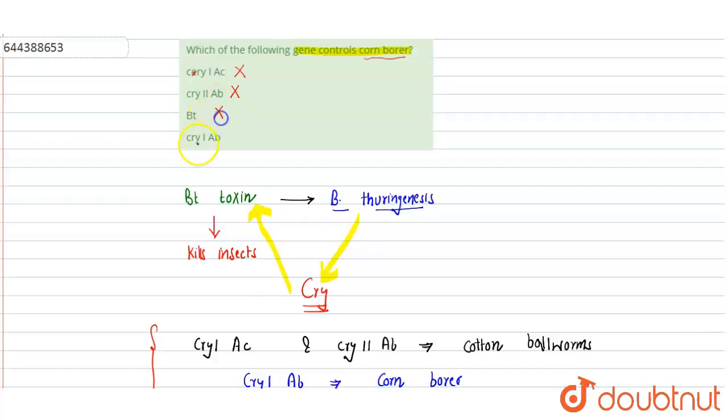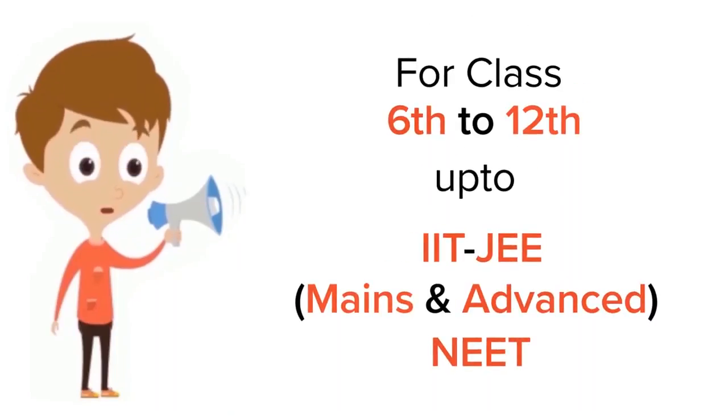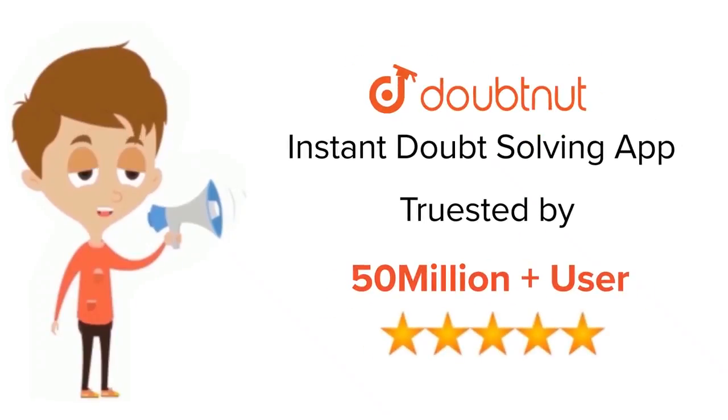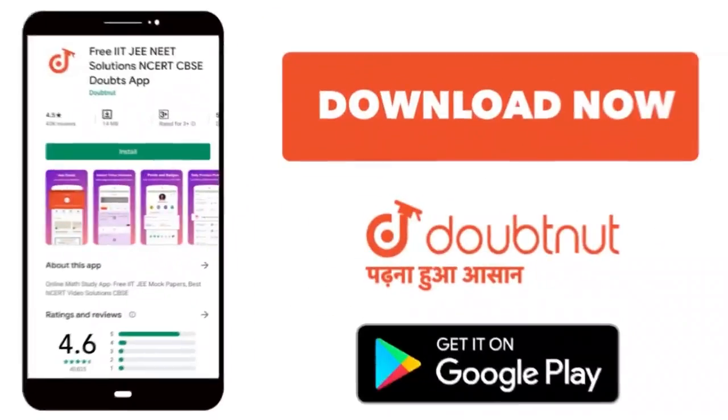So this is the correct option. Option D is correct. Hope you understand. Thank you. For class 6 to 12, up to IIT-JEE and NEET level, trusted by more than 5 crore students, download Doubtnet today.